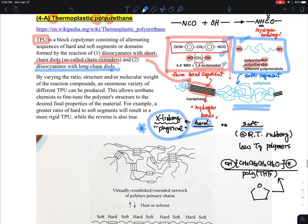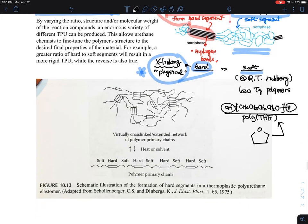By changing the ratio, structure, and molecular weight, and depending on which one you react first and controlling the randomness, you can fine-tune and tune their properties. It's always trying to represent this by soft domain.